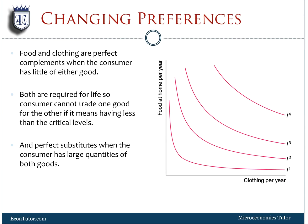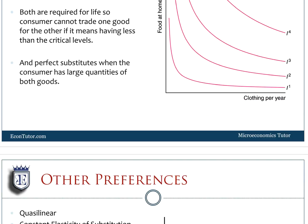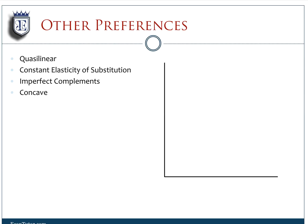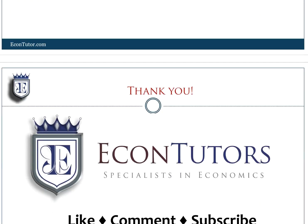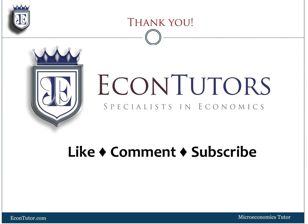Preferences can also change — for instance, with very little food and clothing they might act as perfect complements since you need both to survive, but as you get more of these goods they can become substitutes, transitioning from near-complement to straight-line behavior. In our next lectures we'll cover other preference types not discussed here: quasi-linear, constant elasticity of substitution, imperfect complements, and concave preferences — rare but possible.